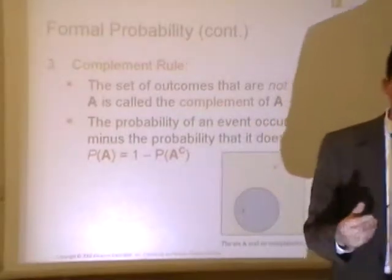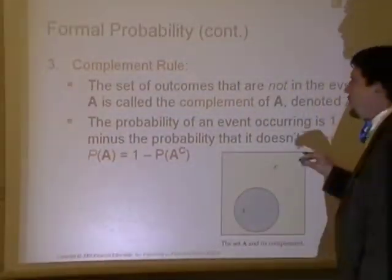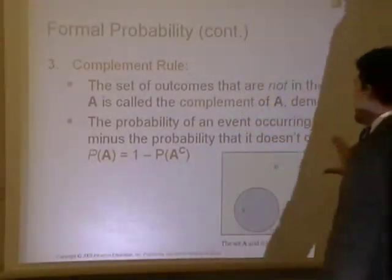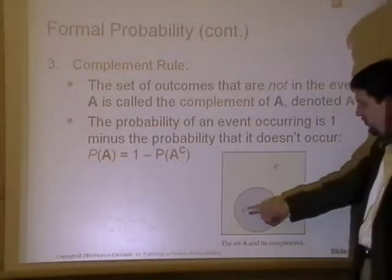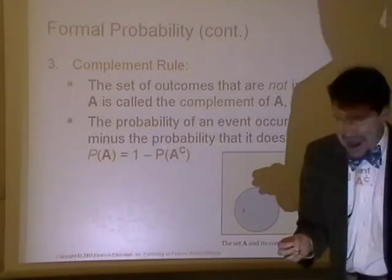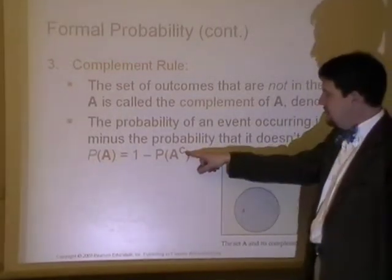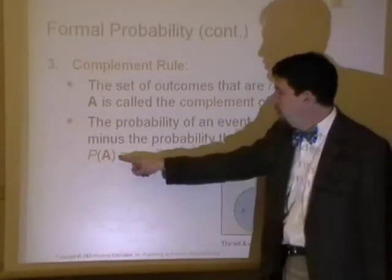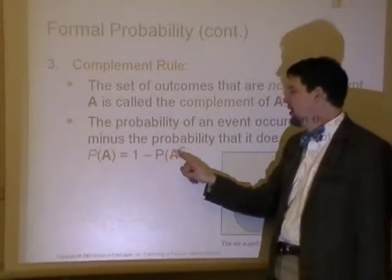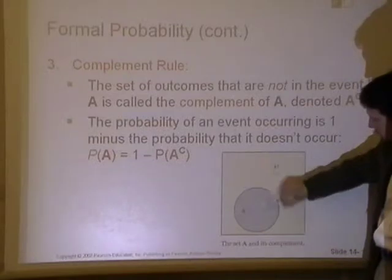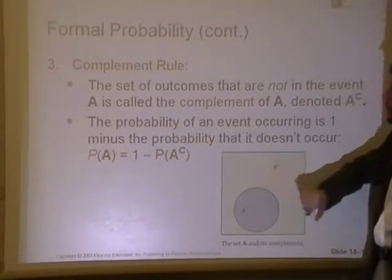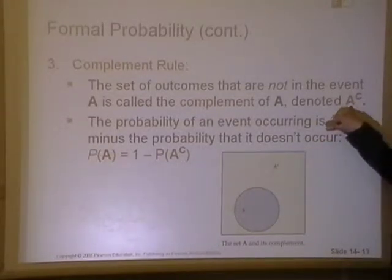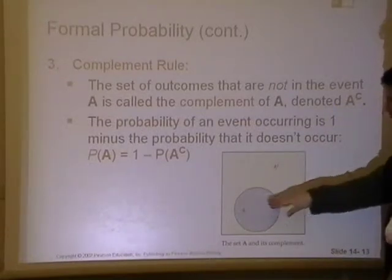Alright. With that information, we have something called the complement rule. Now the complement is very important here. When you talk about geometry, you talk about complementary, which means two angles add up to 90 degrees. Here, we're talking about the probability of event A and the probability of event A not happening or not event A, which we can write as A and its complement. So the probability of A is equal to 1 minus the complement of A. Here's our sample space. Here's the probability that event A happens. Outside that is the probability that event A does not happen, and that's known as the complement.